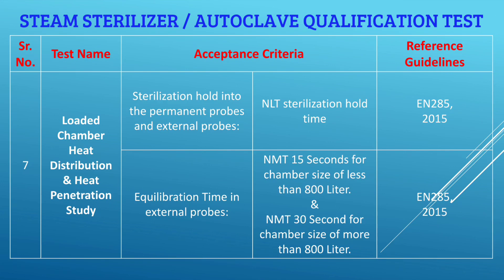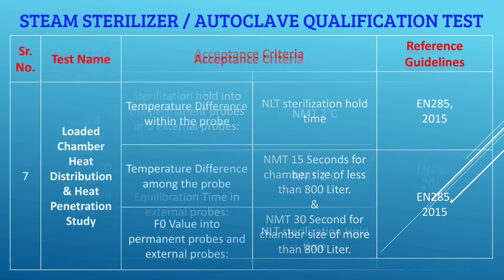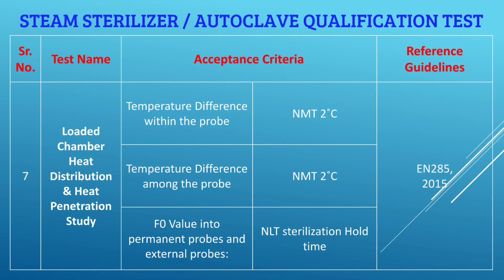The equilibrium time in external probes should be not more than 15 seconds for a chamber size of less than 800 liters, and not more than 30 seconds for a chamber size of more than 800 liters, as given in EN 285:2015. Temperature difference within a probe should be not more than 2°C, and among probes also not more than 2°C. The F0 value in permanent and external probes should be not less than the sterilization hold time.